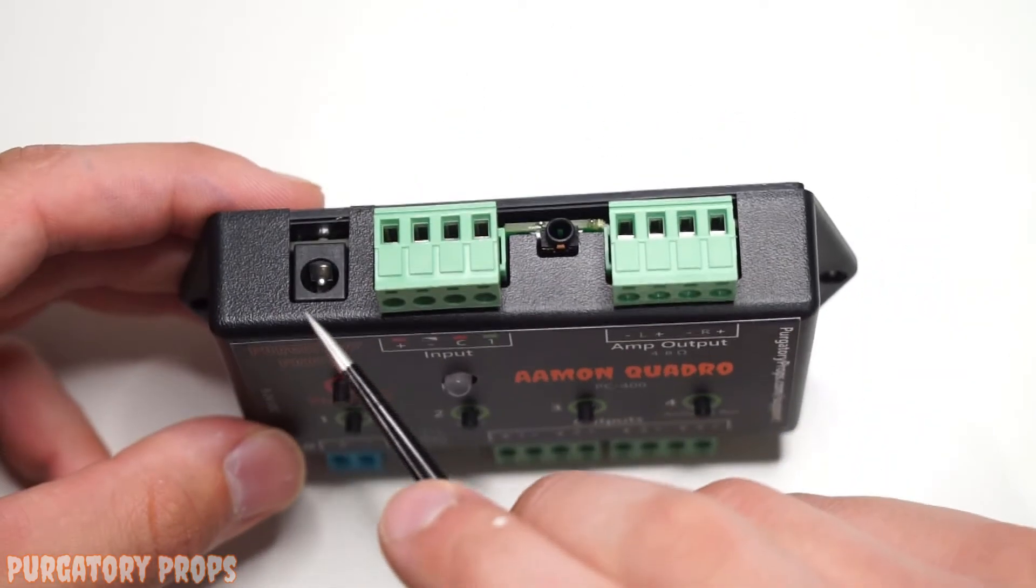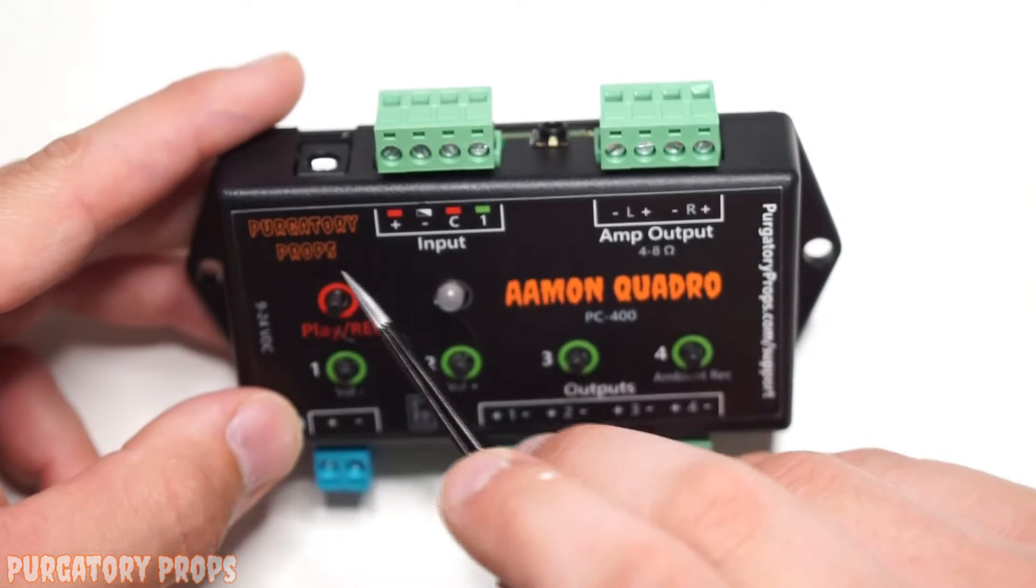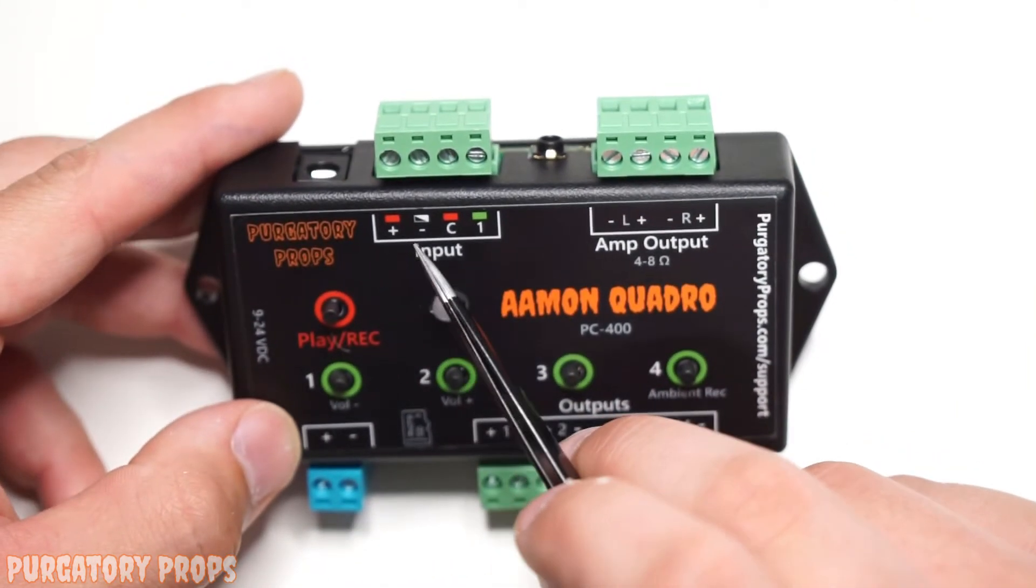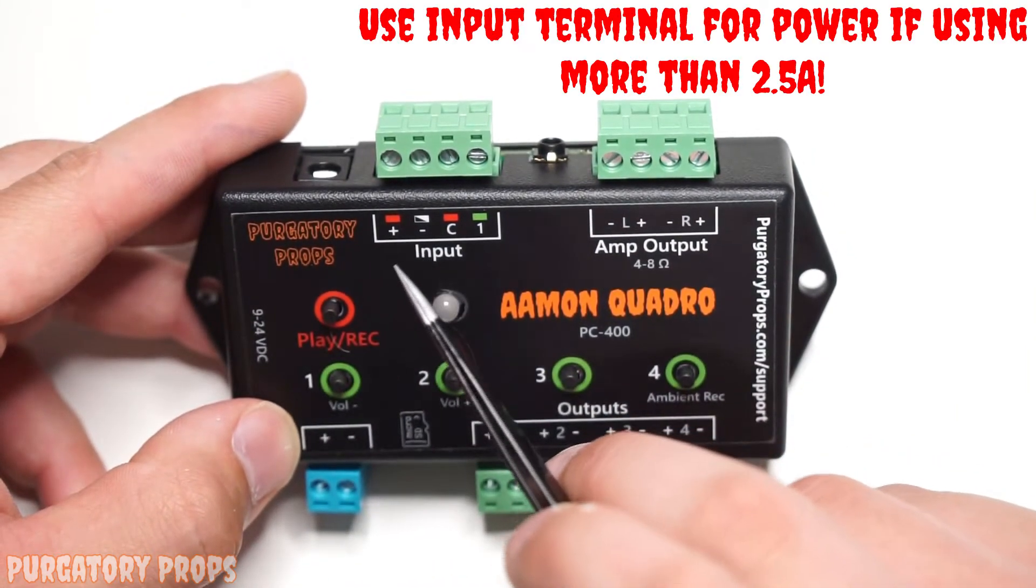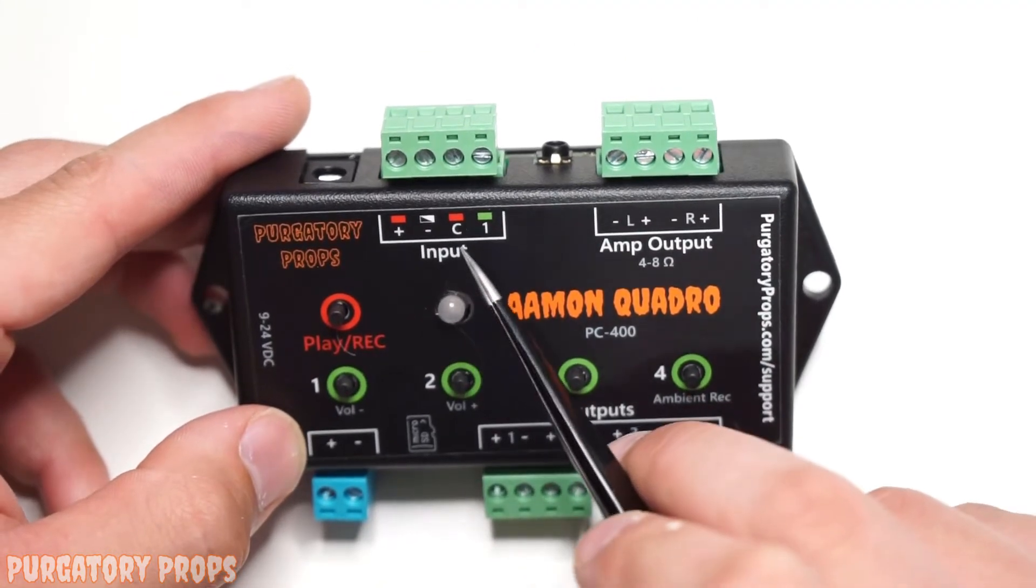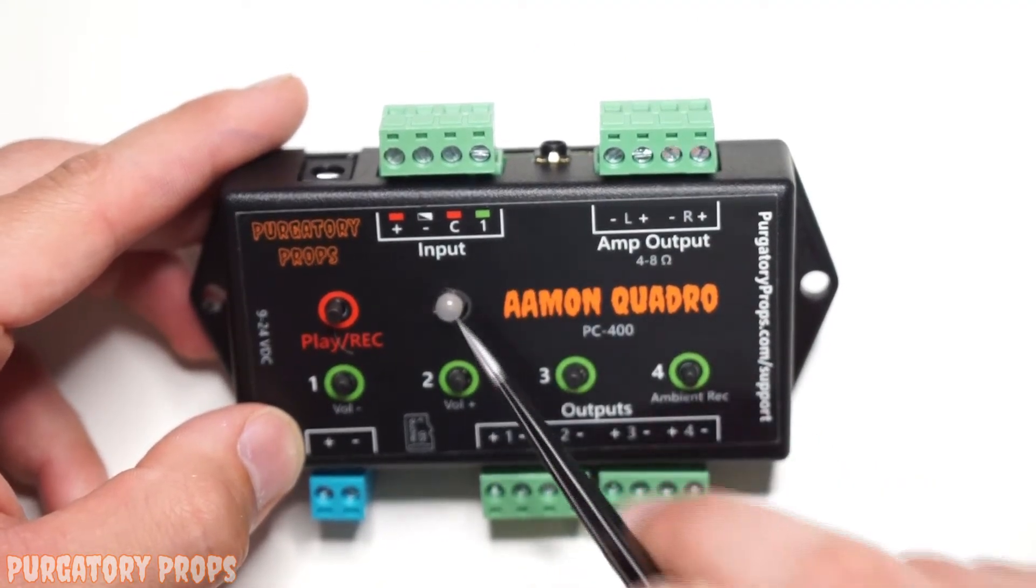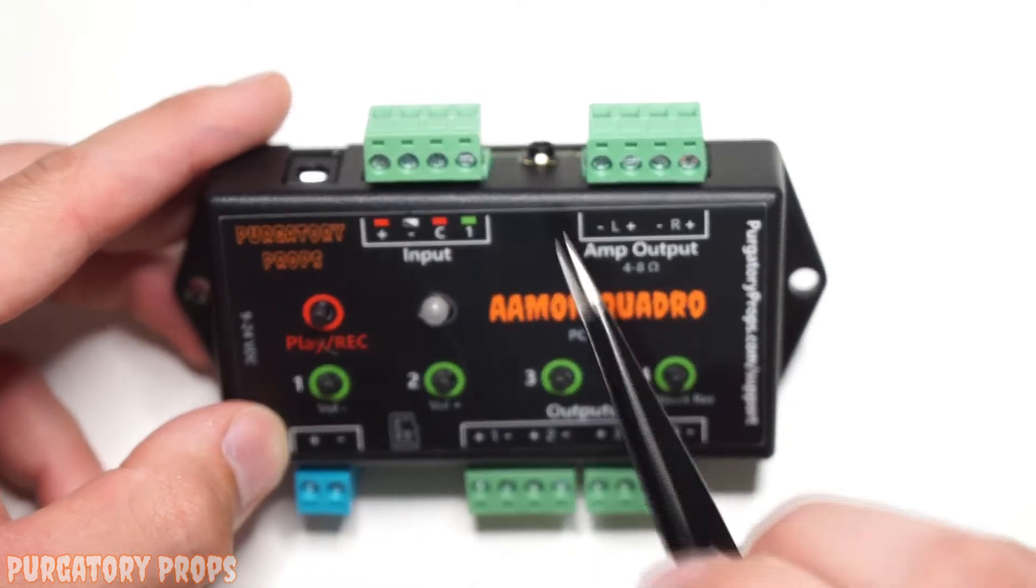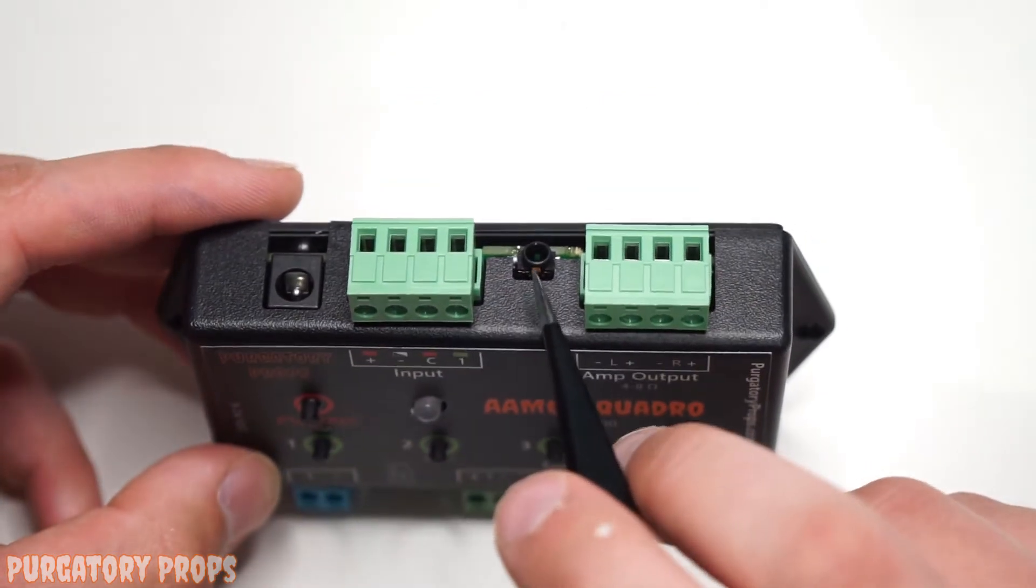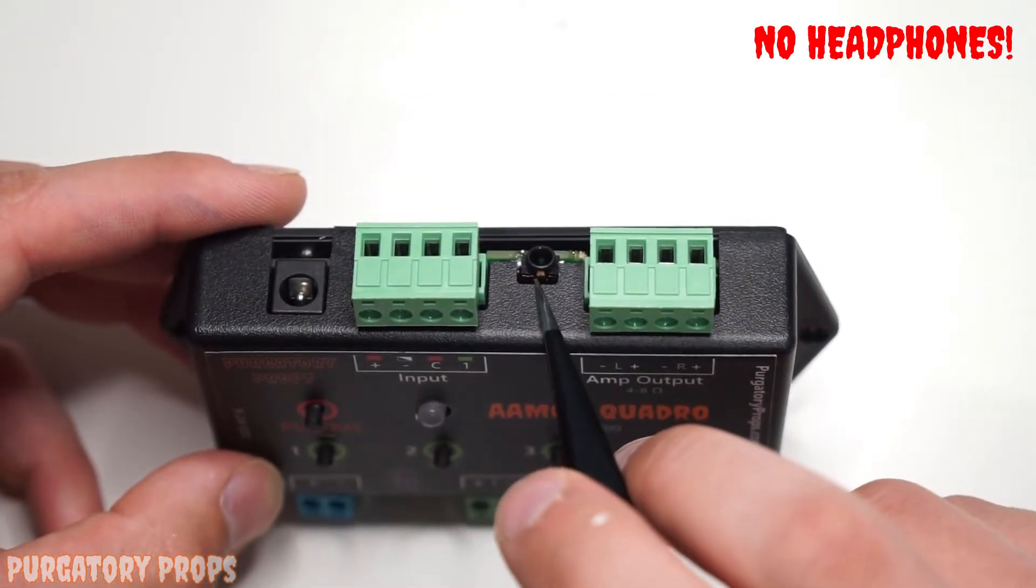On this side we have a DC jack for power and then the input terminal. The input terminal has positive and negative which can also be used to power the controller. Common and then input one, so this is an isolated input terminal.